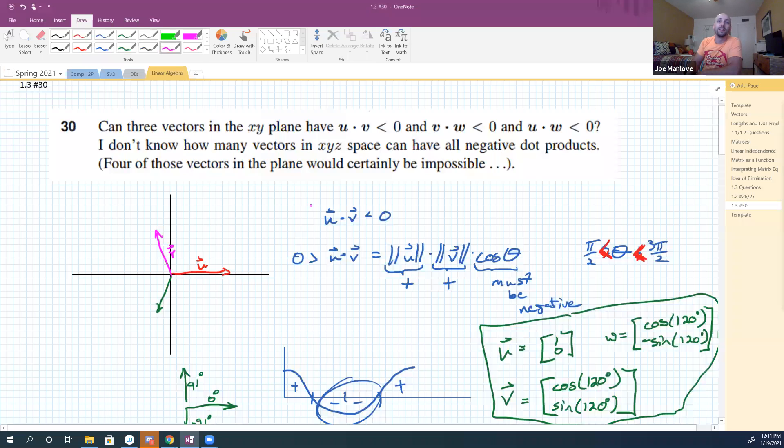But do realize that in order to actually finish this problem, you should have explicitly something like u is [1, 0], and v is... what are the x and y coordinates for this v? Right, negative one-half or something. Just don't be afraid to just use cosine and sine. You're like, it's cosine of 120 degrees and sine of 120 degrees.